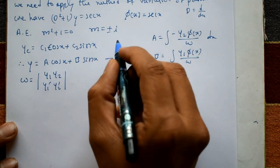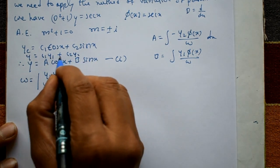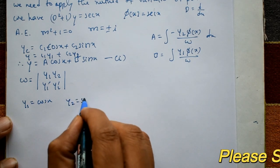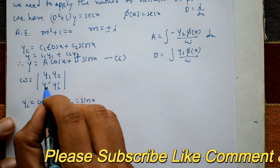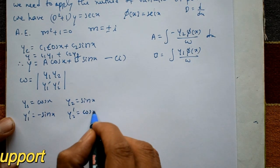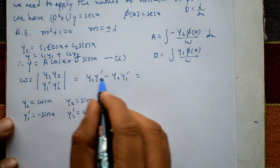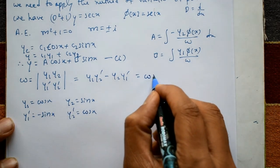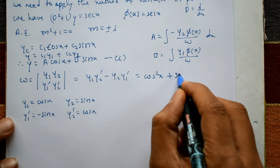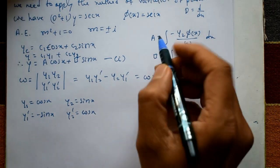Comparing with y = c1·y1 + c2·y2: y1 = cos(x), y2 = sin(x). Then y1' = -sin(x) and y2' = cos(x). Expanding the determinant: W = y1·y2' - y2·y1' = cos(x)·cos(x) - sin(x)·(-sin(x)) = cos²(x) + sin²(x) = 1. So W = 1.